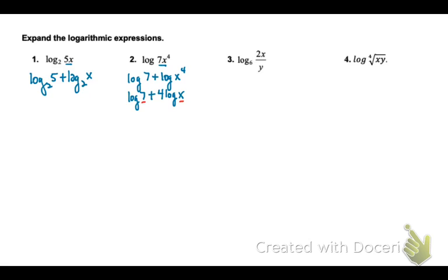Number 3, the operation that's affecting all the terms is division, the quotient. So we'll start by subtracting. We repeat the log and the base. The first term needs to be expanded still. It's multiplied, so we can expand it with addition. Log base 6 of 2 plus log base 6 of x minus log base 6 of y.